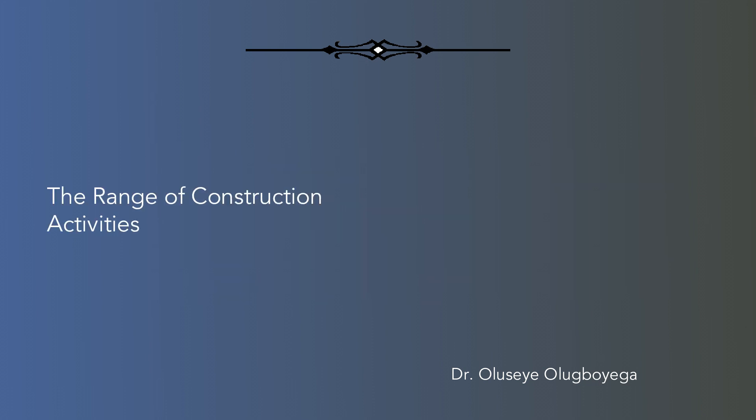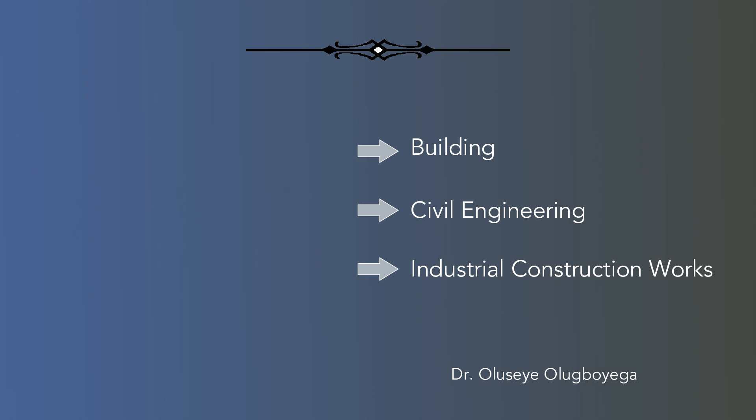The range of construction activities. The ranges of activities are basically divided into three, namely: building, civil engineering, and industrial construction works.